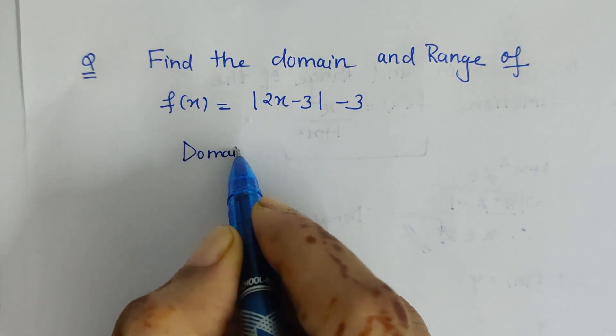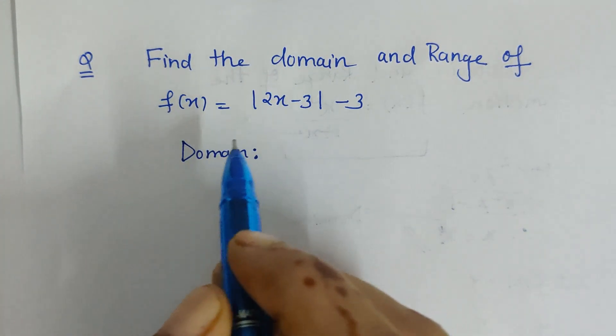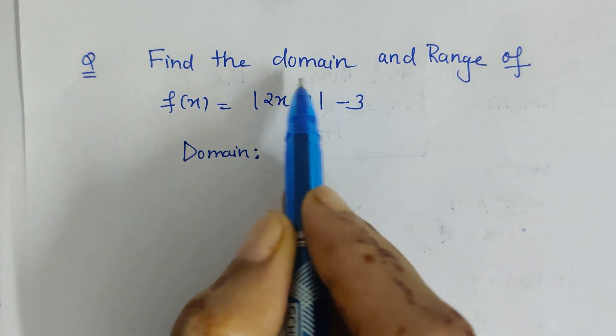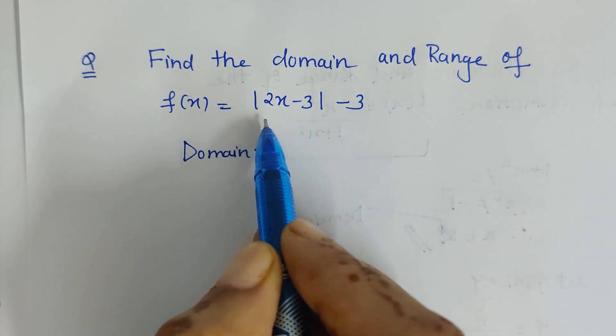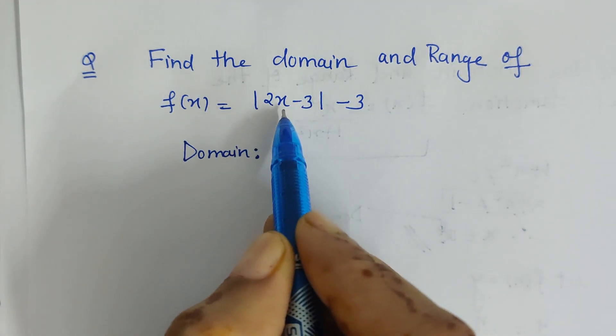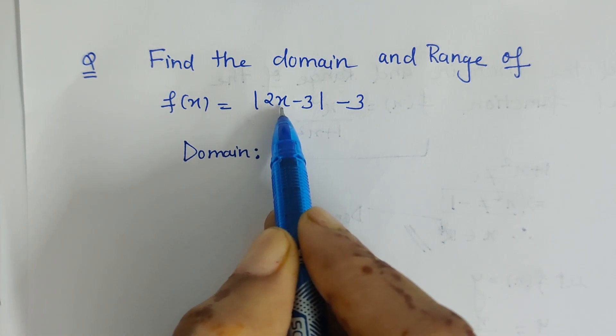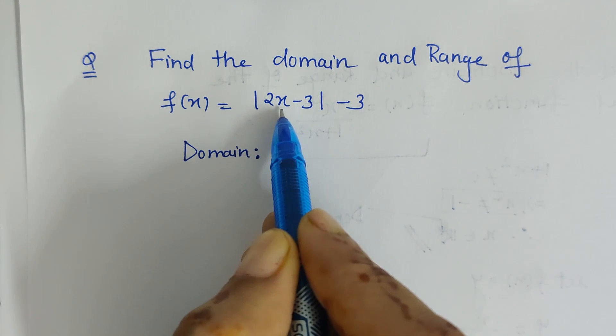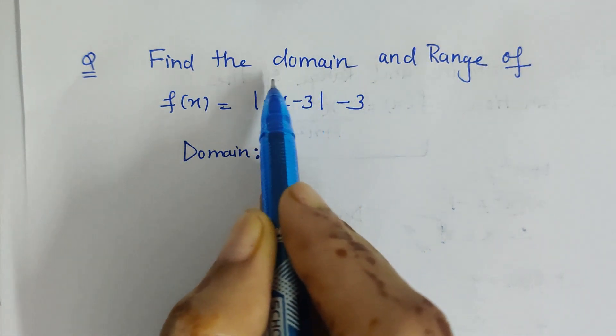When we are talking about domain, what we have to do is check if there is any value for x for which this cannot be calculated. So here what we see is if I put x equal to 1 or -1 or 2.5 or -3.5 or any value of x, it will not be having any problem in calculating this expression.